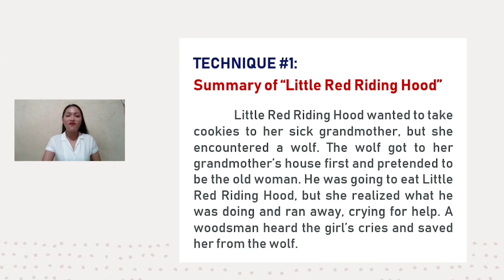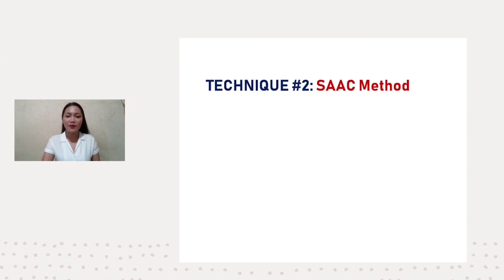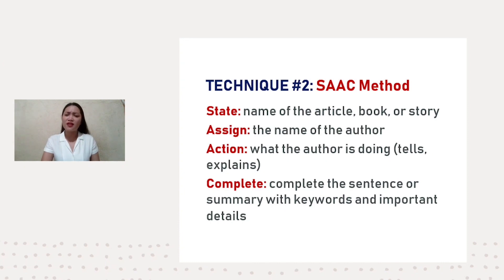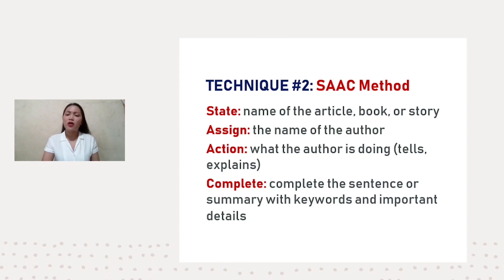Now let us move on to the second technique, which is called the SAAC method. SAAC stands for: State — the name of the article, book, or story. Assign — the name of the author. Action — what the author is doing, such as tells or explains. Complete — complete the sentence or summary with keywords and important details.